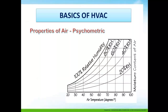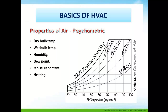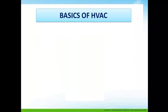Properties of air shown on the psychrometric chart include: dry bulb temperature, wet bulb temperature, humidity, dew point, moisture content, heating, and cooling.